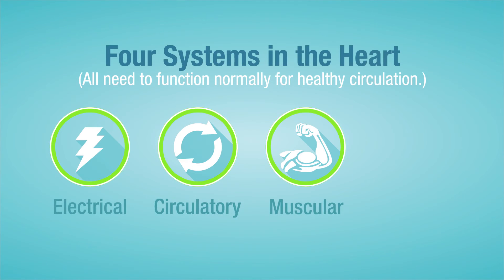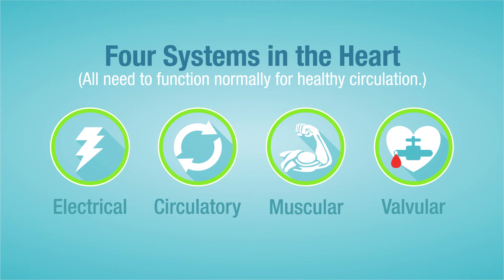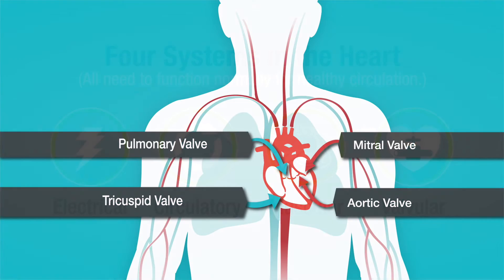But if we didn't have something to divide and direct that blood flow, it's just going to slosh back and forth. And that's where the valves come in. A heart contains four valves: two valves that divide the upper chambers from the lower chambers, and then valves that divide the lower pumping chambers on the right side from the lungs and the left side from the body.